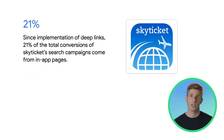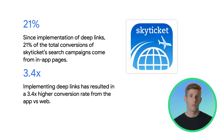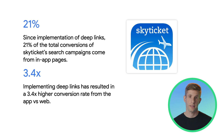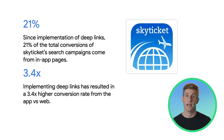SkyTicket, which helps users find flights, was looking for a solution to fully leverage their app by connecting it to their search and display ads. After implementing deep links, 21% of the total conversions of SkyTicket search campaigns come from in-app pages. This has resulted in a 3.4 times higher conversion rate from the app versus the web.